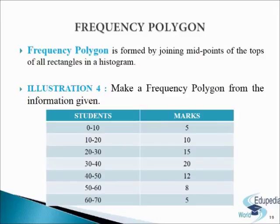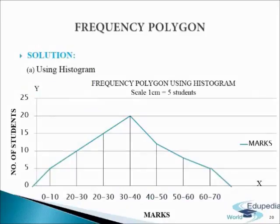Let us understand this with the help of the following illustration. We have to make a frequency polygon from the information given, i.e. students and the marks they have obtained. First, we will make a frequency polygon by using a histogram. Data are first presented in the form of a histogram. Mid-points of the tops of rectangles are marked and then joined using a scale or foot rule. The mid-points of the polygon are joined to the immediate lower or higher mid-points at zero frequency with the baseline, to equate the area of the polygon with the area of the histogram.